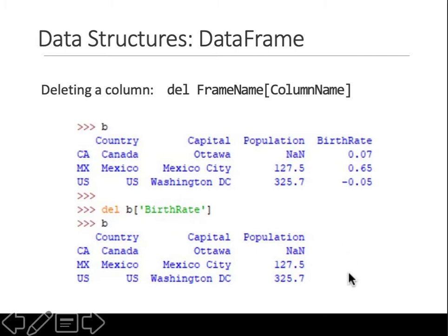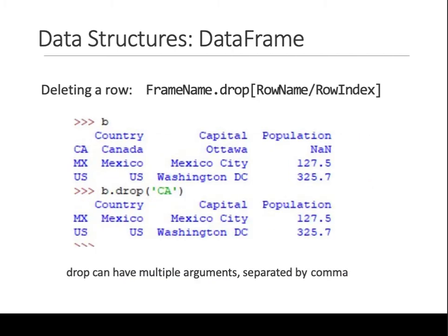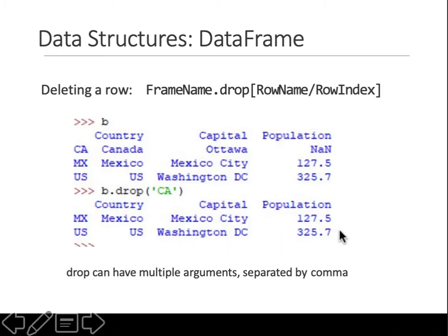To delete a specific row, use the .drop() command with either a row name or row index. For example, dataframe.drop('ca') removes the 'ca' row, leaving only 'mx' and 'us'. Drops can also take multiple arguments separated by commas.